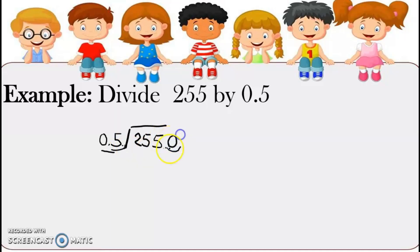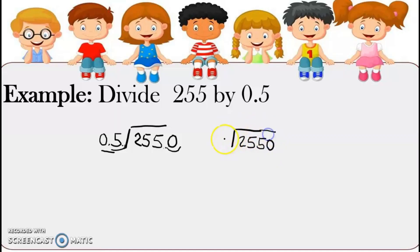Zero. Okay, kaya magiging decimal. So that will be 2550 divided by 5 na siya. Bakit 5 ulit? Kasi minove na natin yung decimal point dito. Nandito na yung decimal point niya.